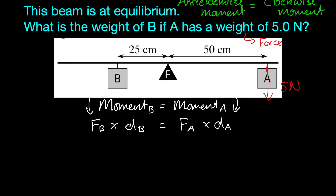Now we need to substitute into our equation. We don't know what the force of B is yet, so we're going to leave that as FB. The distance of B is 25cm. However, we're not going to use 25cm — we're going to use 0.25m instead, because distance is measured in meters, not centimeters.